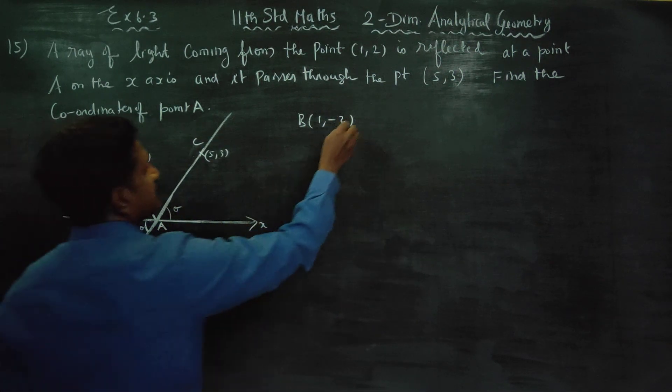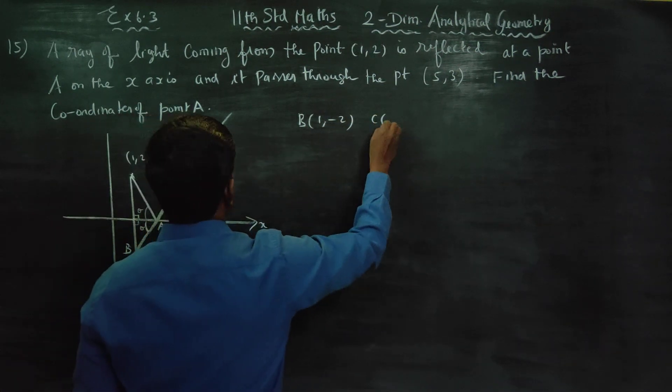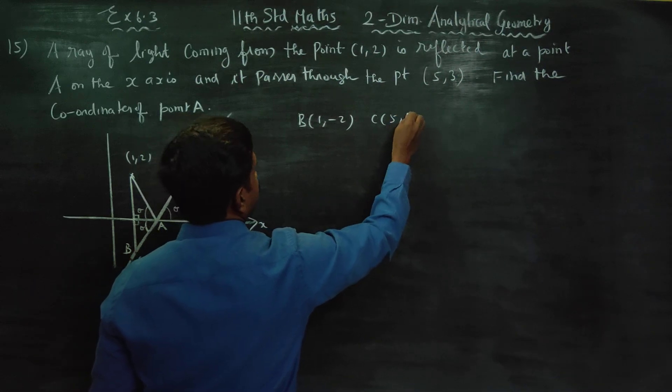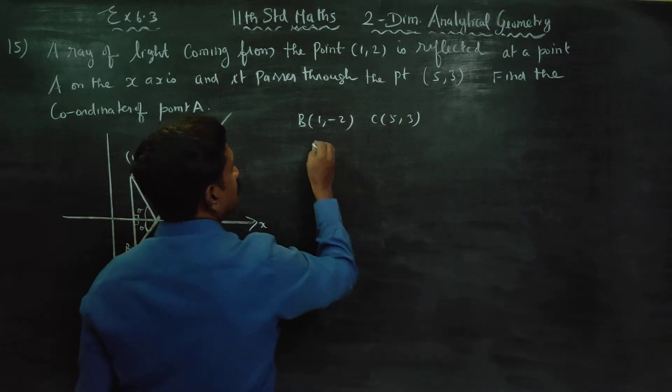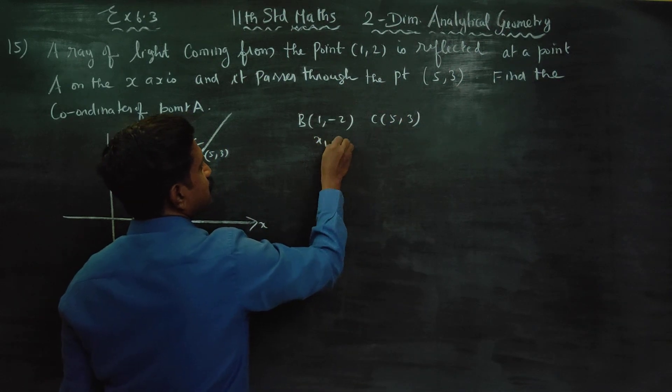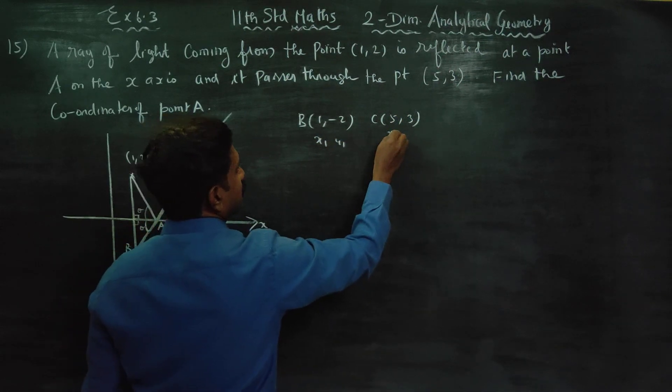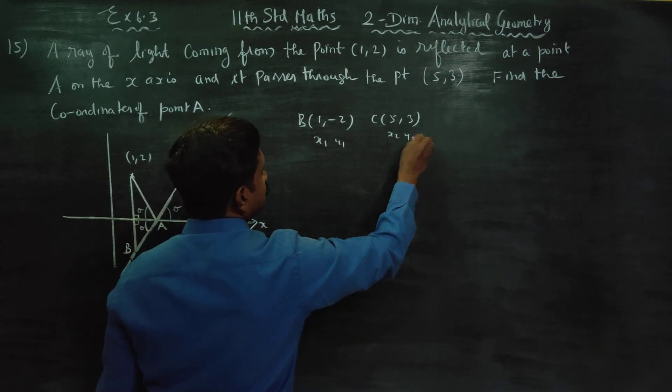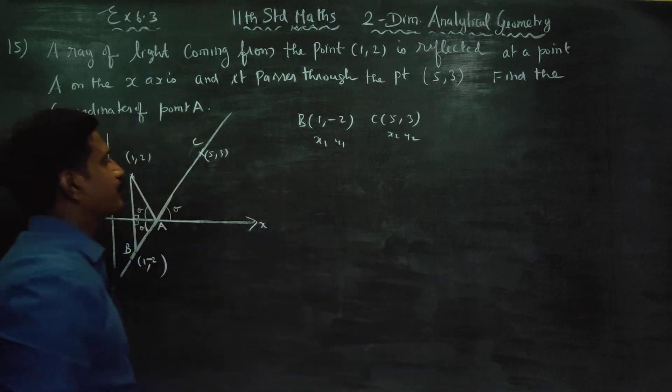Point C is equal to (5, 3). This is x1, y1 and this is x2, y2.